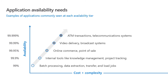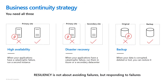Depending on the availability you're guaranteeing for customers, it largely depends on the business or mission criticality of the application. Applications doing batch processing, data extraction, or ETL jobs may have 99% availability. On the other end of the spectrum, ATMs and telecommunication systems may require five nines, or 99.99%. It is not practical to say every IT component will be 99.999%. You'd have to set priorities based on how critical each application is, and then choose a business continuity strategy based on your SLAs, SLOs, and SLIs.